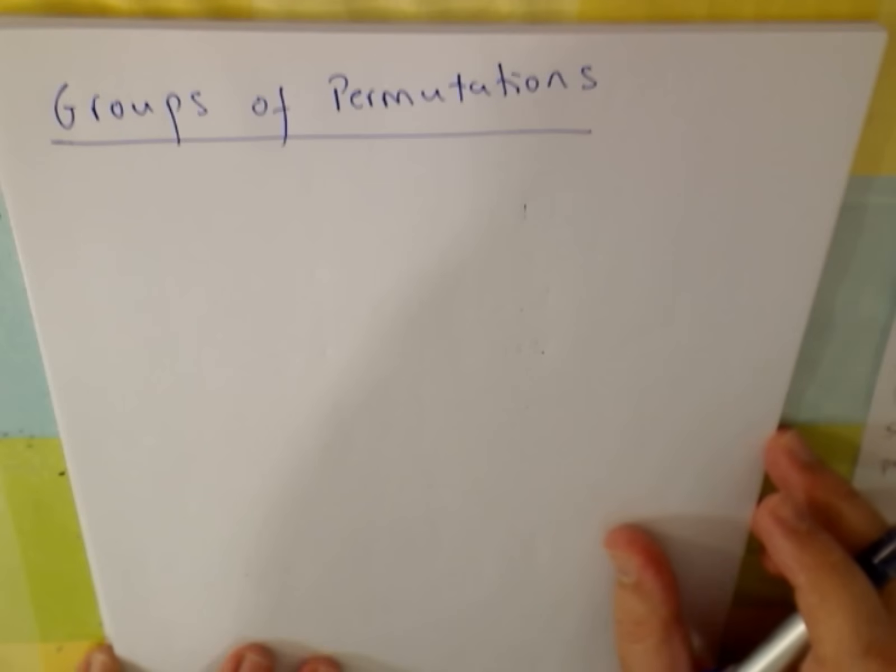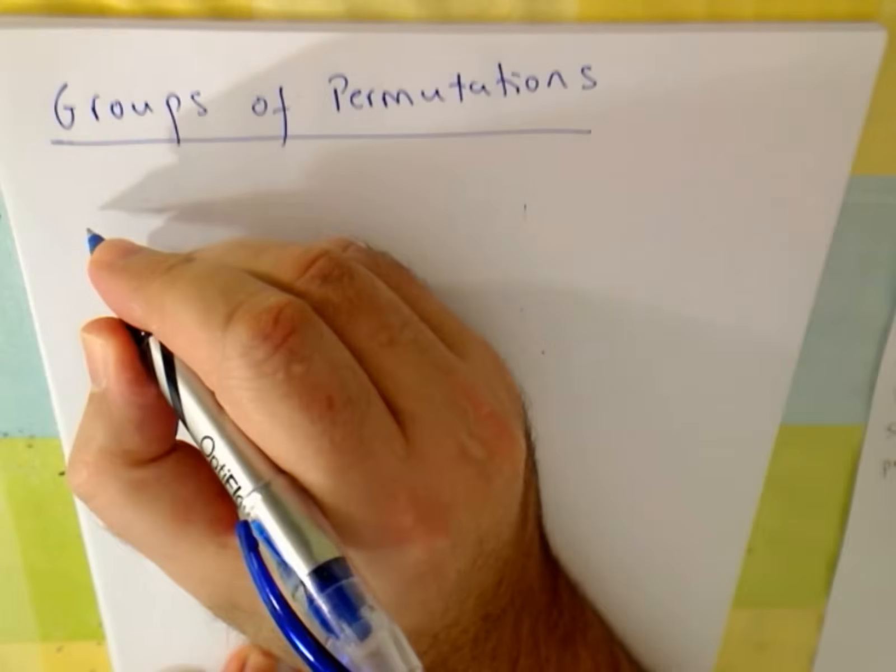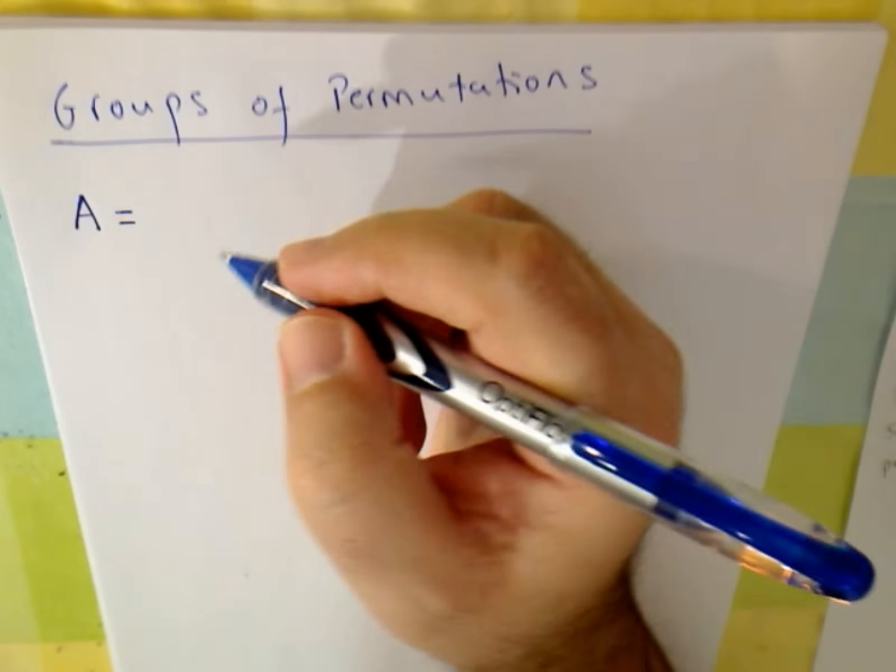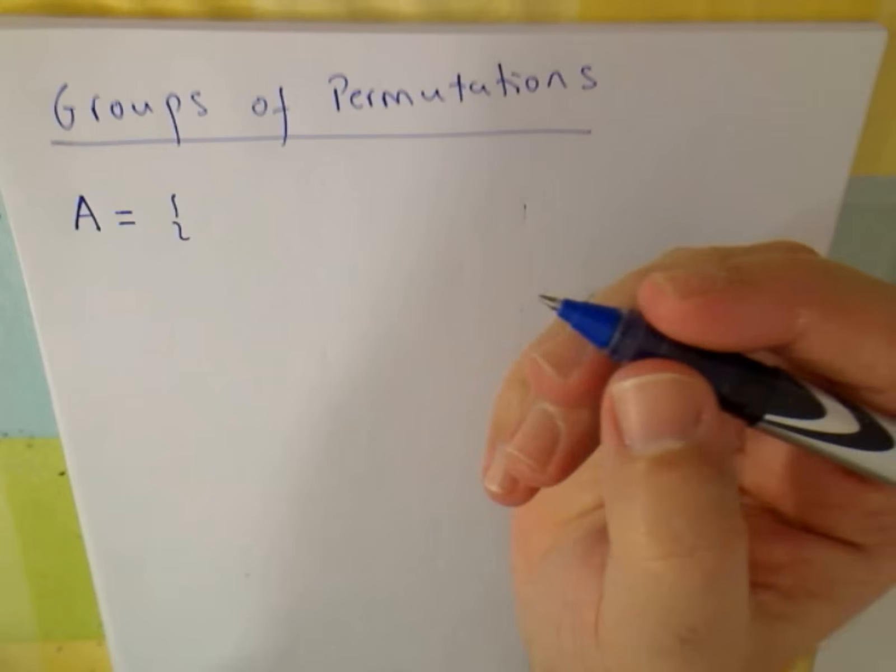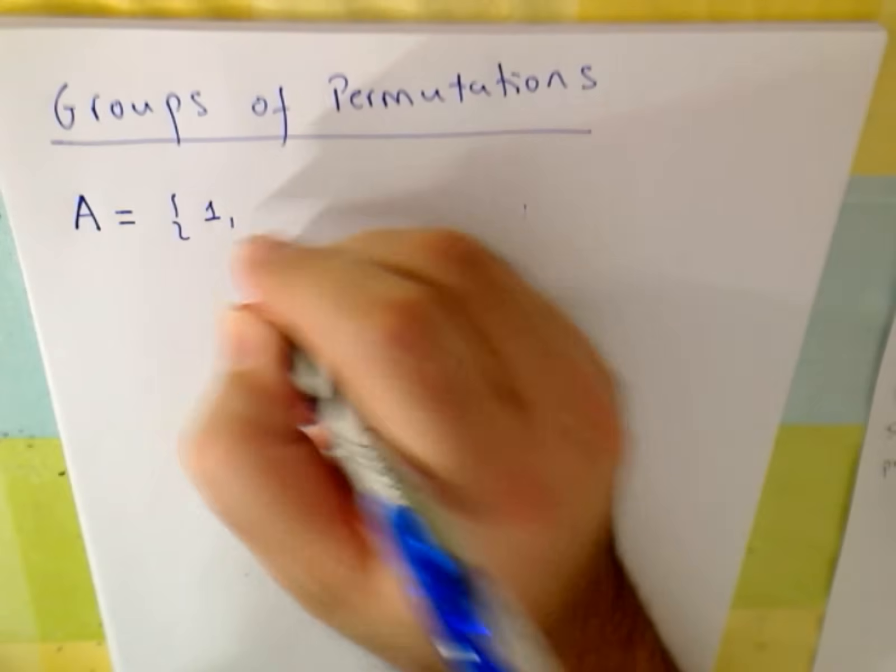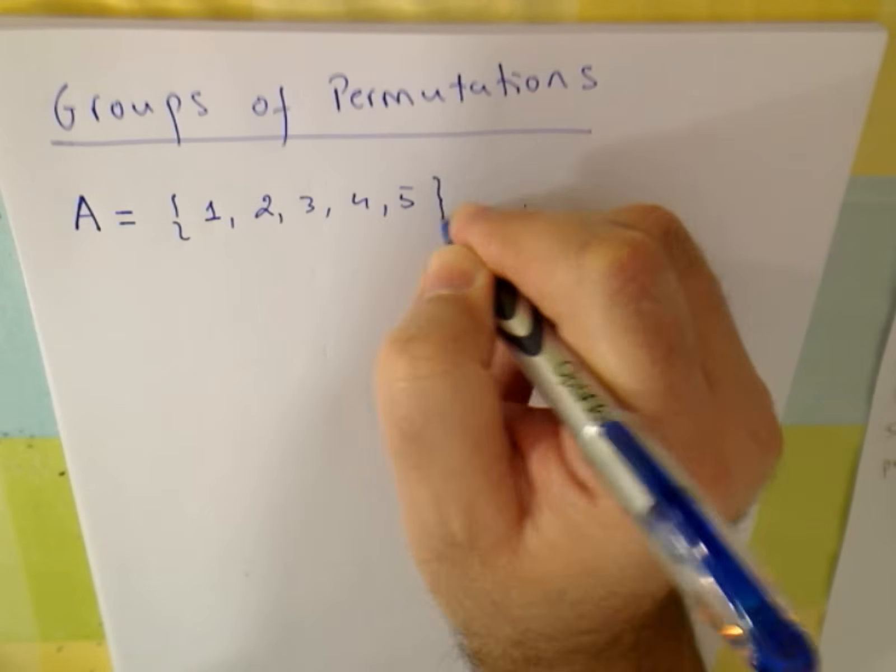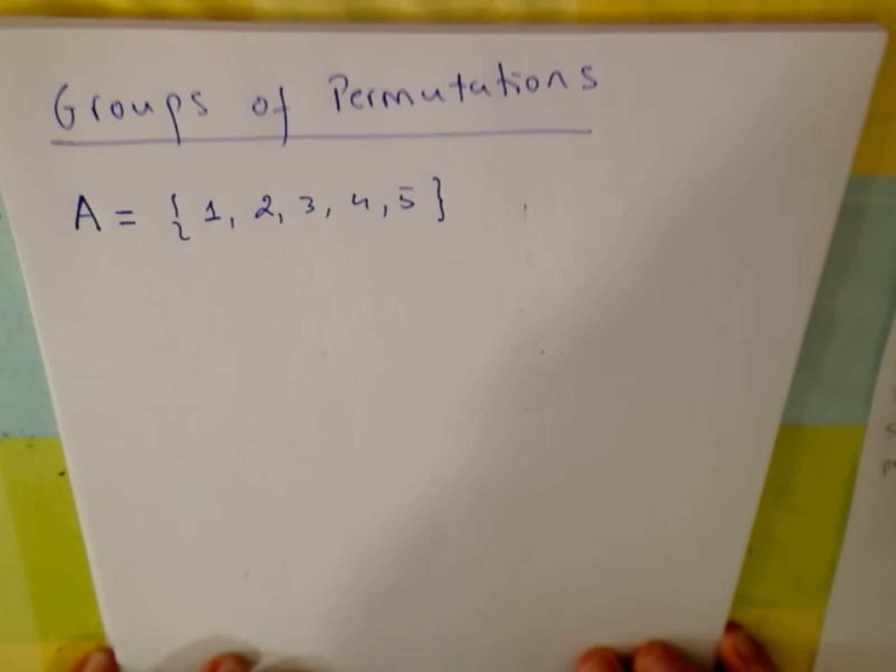So imagine we have a set. I am going to call it A. And we have a couple of elements. Let us say 1, 2, 3, 4, and 5. What is a permutation here?